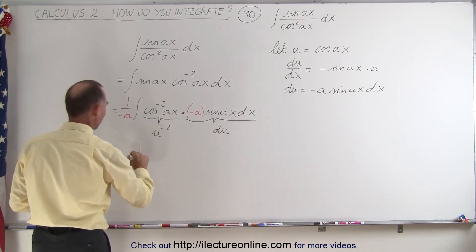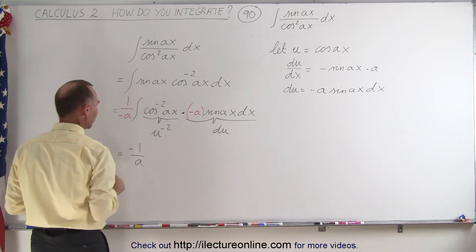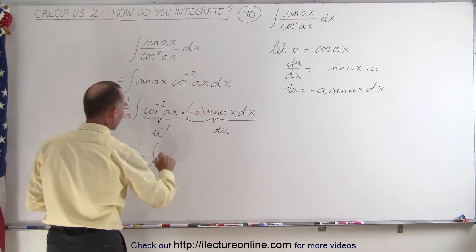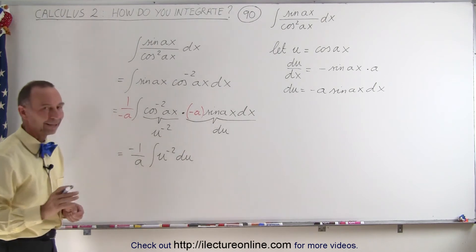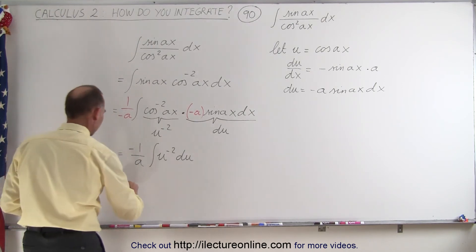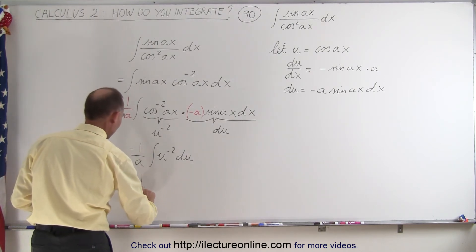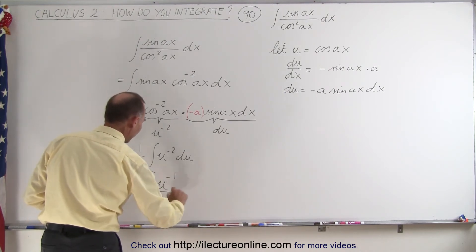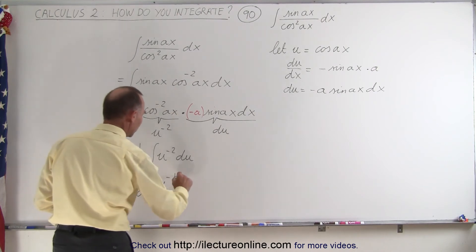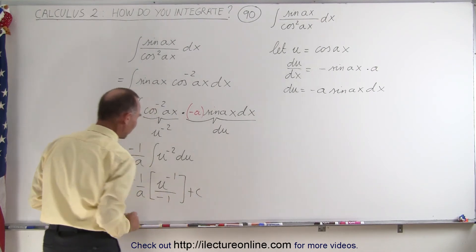This is equal to minus one over a, I'll just put the minus on the top, times the integral of u to the minus two times du. And that we know how to integrate. Because this is equal to minus one over a times u to the new exponent, which is minus one, divided by the new exponent minus one, plus a constant of integration.